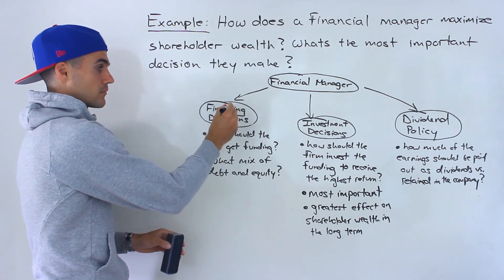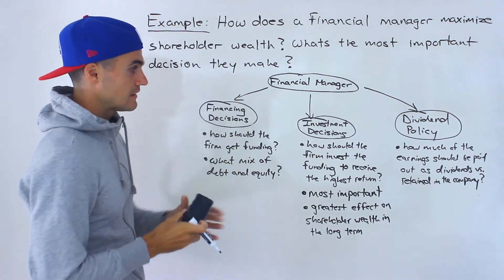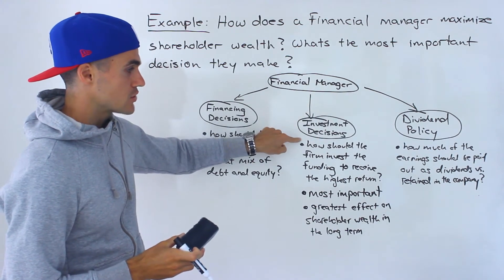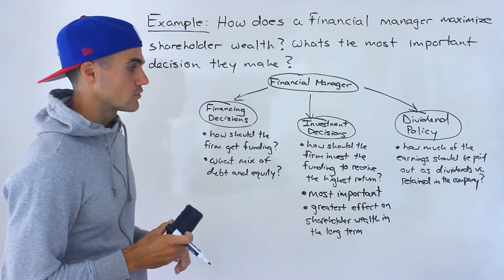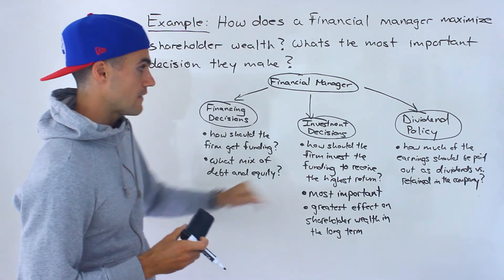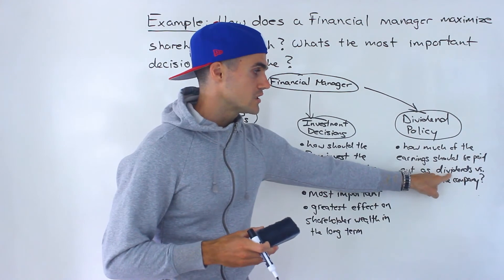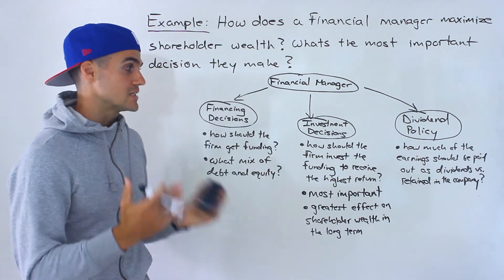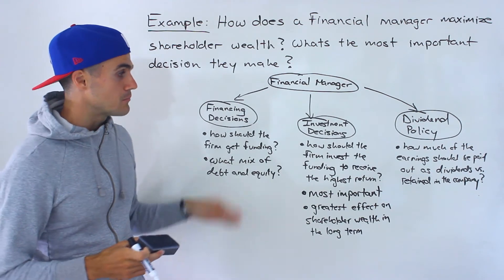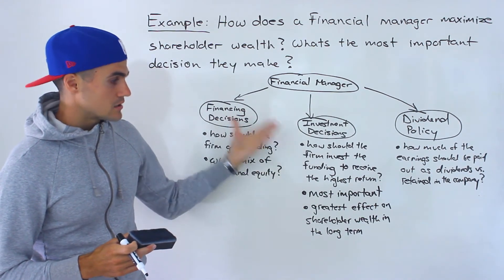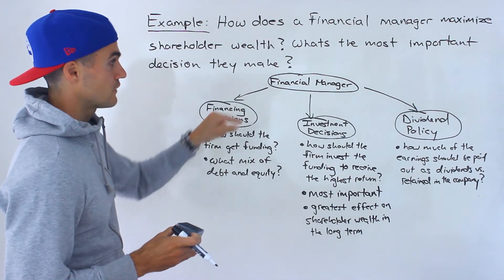But if it's the other way around — say the firm gets the lowest cost of capital they can, so their financing decisions are perfect — but then they start investing in bad projects or in projects that aren't giving a high return, then no matter how good that financing is, the firm isn't going to be able to grow and may even start taking losses. And dividend policy becomes irrelevant because if there are any earnings, they all have to be retained just to survive and get the company back up to par. So investment decisions in the long run have the greatest effect on shareholder wealth, and are the most important decisions a financial manager makes.